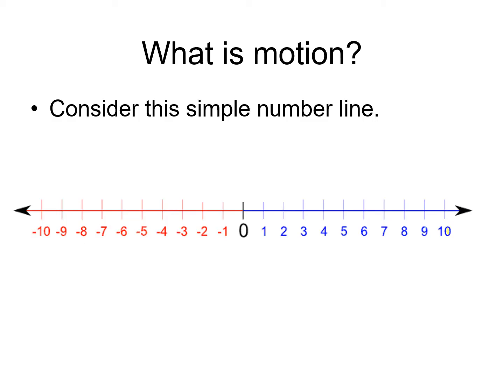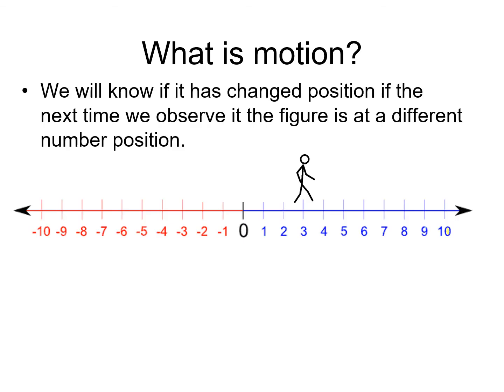Consider this simple number line. I can draw a stick figure above the line and I think you would agree with me that the figure is at the position labeled 3. We will know if the stick figure moves if it changes its position on the number line.